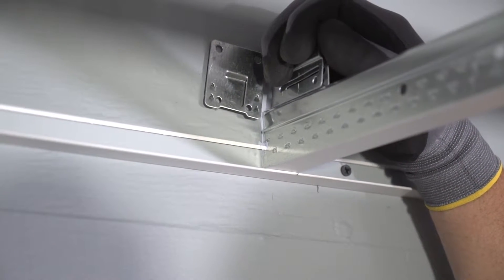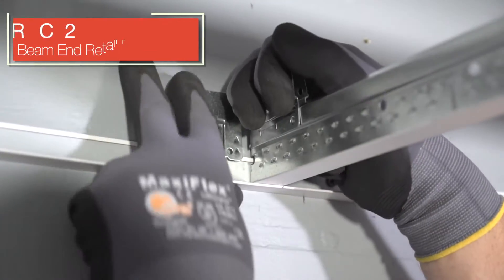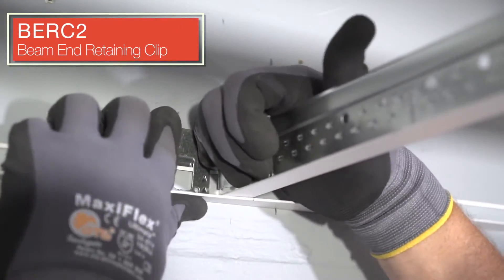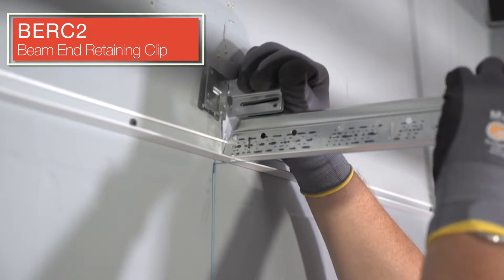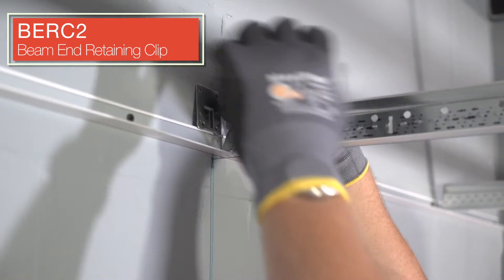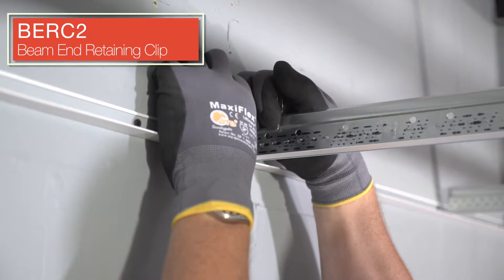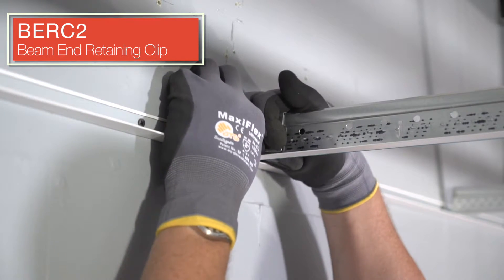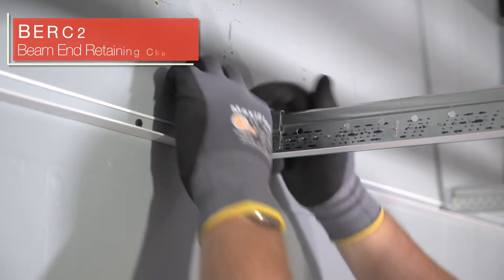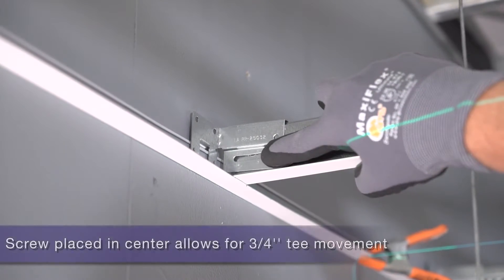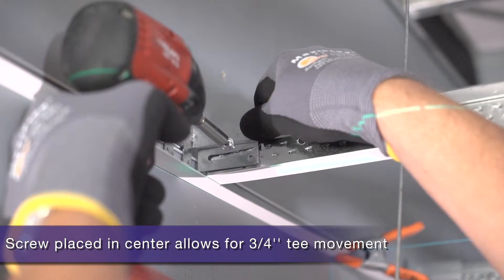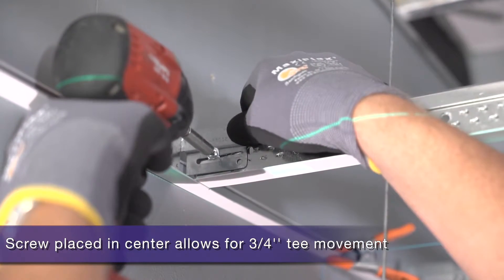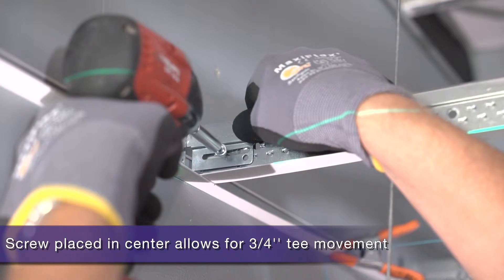Seismic RX allows us to eliminate 2-inch wall angle and stabilizer bars as long as you use the Burke 2 or beam end retaining clip. The clip slips between the angle and the wall and will ultimately be screwed to the vertical angle once your grid is square. A framing screw placed into the center of this elongated slide allows the tee to move 3-quarter inch forwards or backwards in a seismic event.